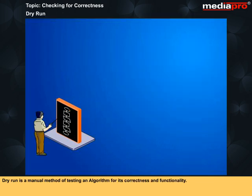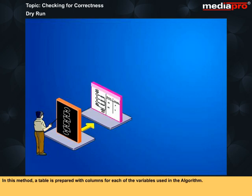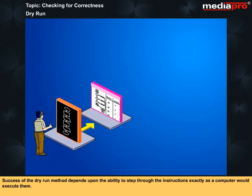Dry Run is a manual method of testing an algorithm for its correctness and functionality. In this method, a table is prepared with columns for each of the variable used in the algorithm. The value of each variable is updated in the table as we proceed through the algorithm. Success of the Dry Run method depends upon the ability to step through the instructions exactly as a computer would execute them.